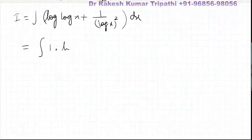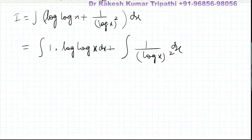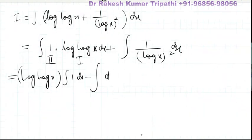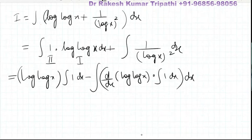We can write this as the integral of log(log x) dx plus a second integral of 1 upon (log x) squared. In the first integral, let us consider log(log x) as the first function and 1 as the second function. So on applying the product rule: first function constant times the integral of the second function, minus the integral of the differential of the first function times the integral of the second function, dx plus 1 upon (log x) squared.